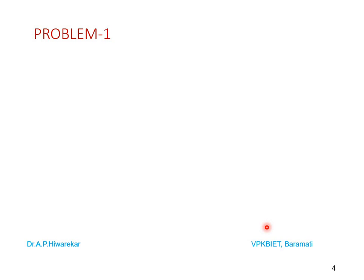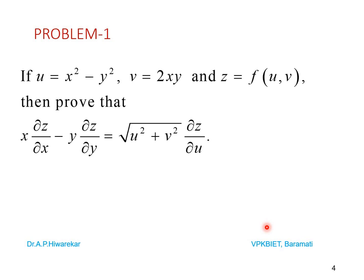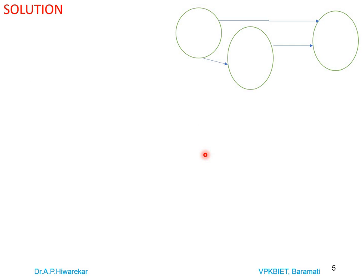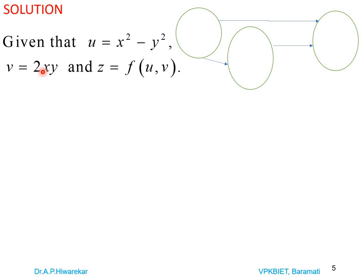With this we now go to solving problems. Problem number one: if u = x² - y², v = 2xy, and z is a function of u and v, then prove that x(∂z/∂x) - y(∂z/∂y) = √(u² + v²) · (∂z/∂u). To solve this problem, since u and v are functions of x and y, and z is a function of u and v, z is a composite function of x and y. We construct a diagram accordingly.